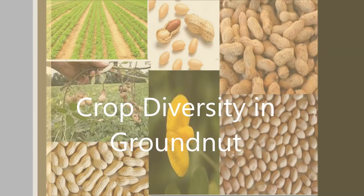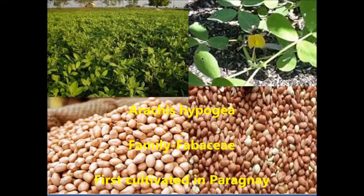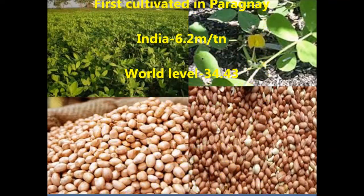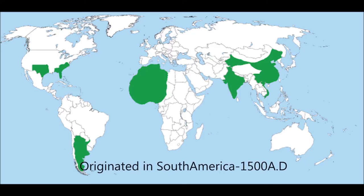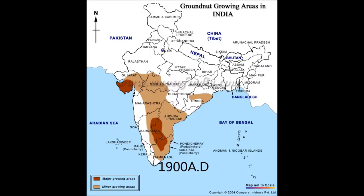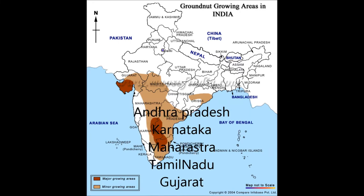Crop diversity in groundnut. Groundnut belongs to the family Fabaceae. Groundnut was first originated in South America in 1500 AD. In India, groundnut was first introduced in 1900 AD. The major cultivating areas of groundnut in India are Andhra Pradesh, Karnataka, Maharashtra, Tamil Nadu and Gujarat.